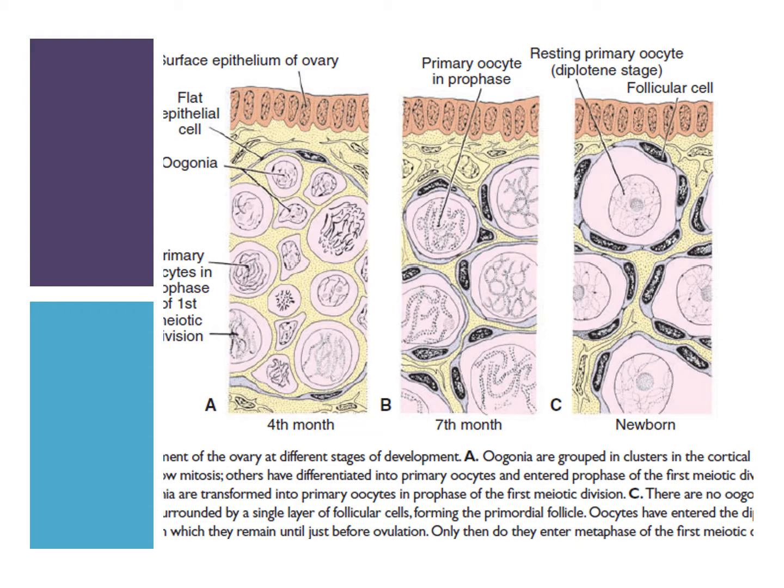Most primary oocytes become atretic during childhood, so that by the time puberty is reached, approximately 40,000 primary oocytes would be left, and there are fewer than 500 primary oocytes ovulated. By the time the baby is born, the newborn would have primary oocytes found within growing follicles, estimated to be somewhere between 600,000 to 800,000.